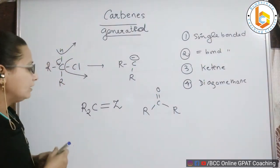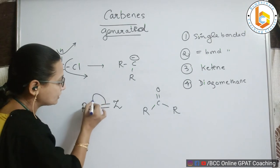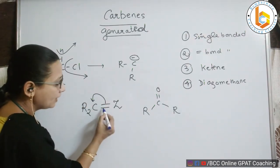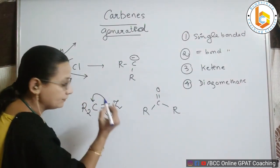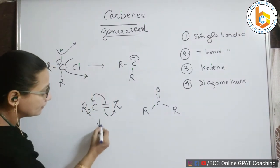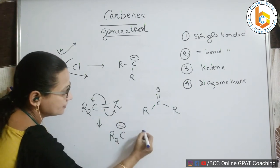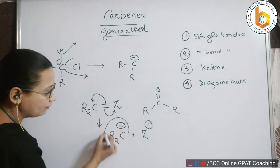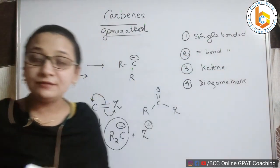For R₂C=Z, where Z is some heteroatom, what will happen is there will be movement of electrons like this — a pair of electrons going onto this carbon, and the π bond electrons going onto Z, because Z can pull electrons towards itself. So what do I get? R₂C⁻ and Z⁺ — nothing but a carbene formed from a double-bonded compound.